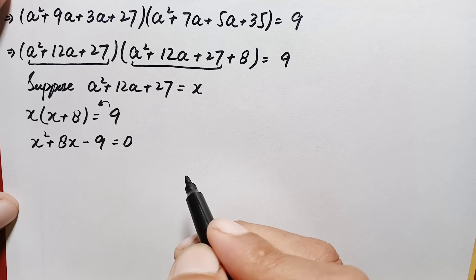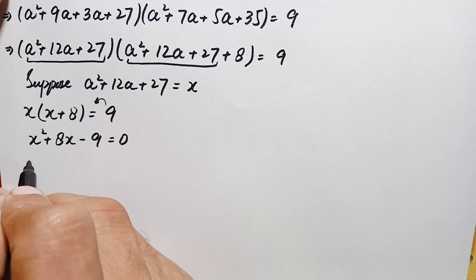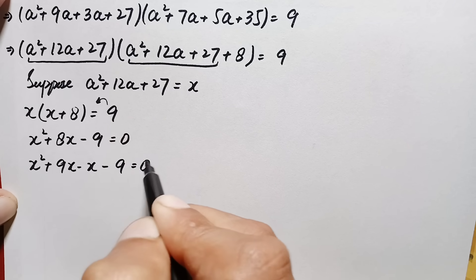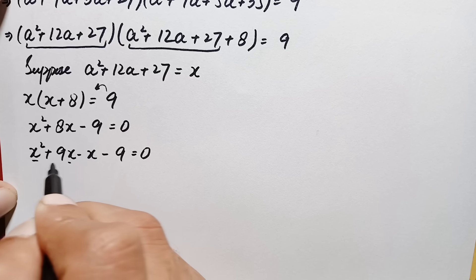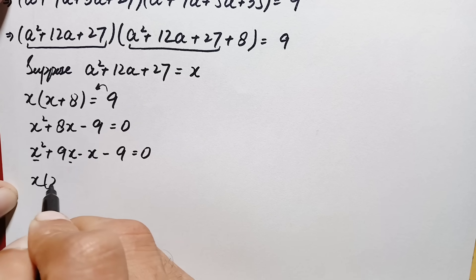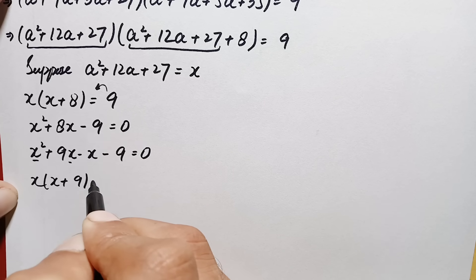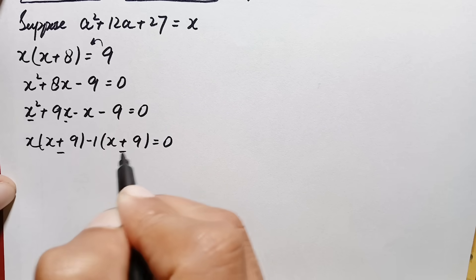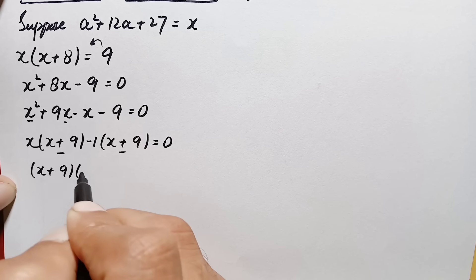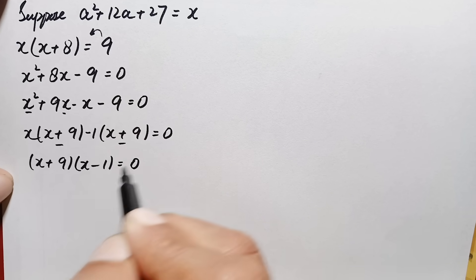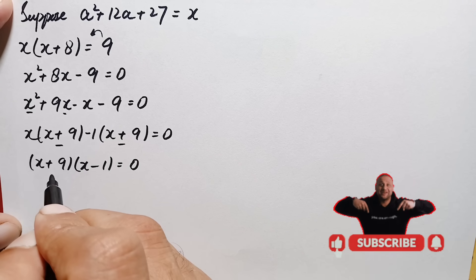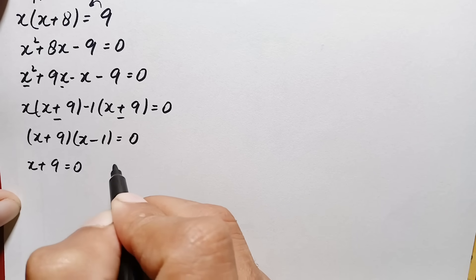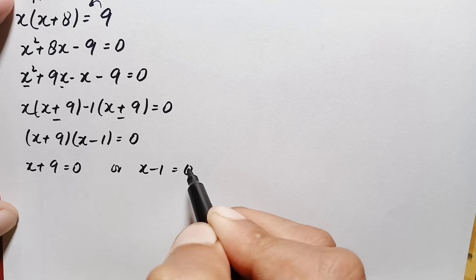This is a quadratic equation we can solve by factorization. We write 8x as 9x−x, giving x²+9x−x−9 = 0. Taking x common from the first two terms gives x(x+9), and taking −1 common from the last two terms gives −1(x−1) = 0. So (x+9)(x−1) = 0, meaning either x+9 = 0 or x−1 = 0.